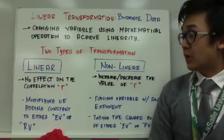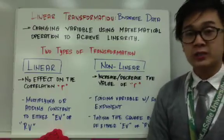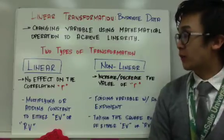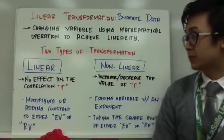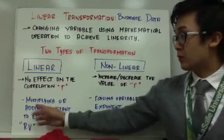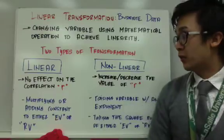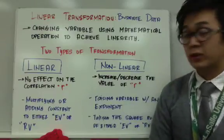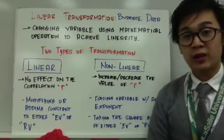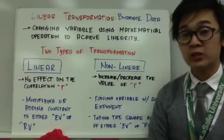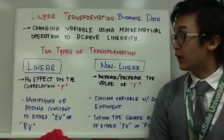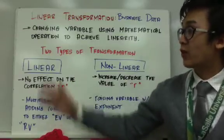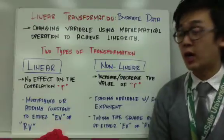What types of operations can we use to perform a linear transformation? We can either multiply, add, divide, or subtract either the explanatory variable or the response variable, and we will achieve linearity without any effect on the correlation r.